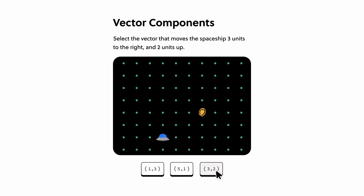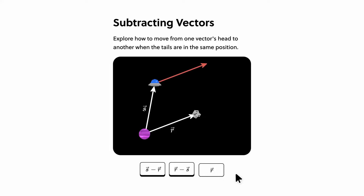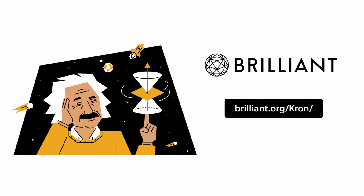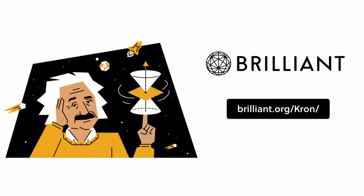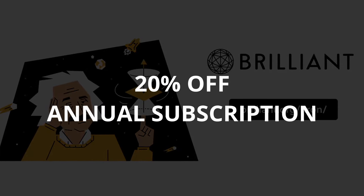The course I'm currently taking is about vectors. Vectors are used to describe motion and orientation in space and are very important in shaders as well as game development. The course covers vector operations such as scaling, transformations, polar coordinates and the dot product. It also helps to enhance your ability to visualise and solve problems in multi-dimensional spaces. To try everything Brilliant has to offer for free for a full 30 days, visit brilliant.org/Kron, or alternatively click the top link in the description. Anyone who does use the link will also get 20% off an annual premium subscription.